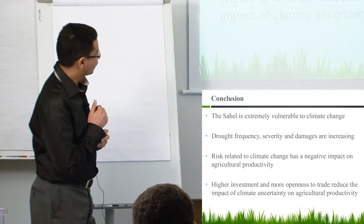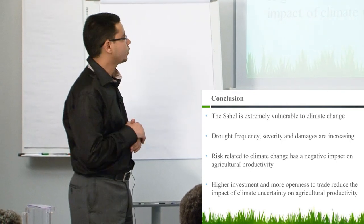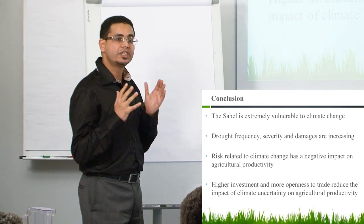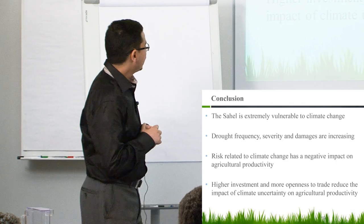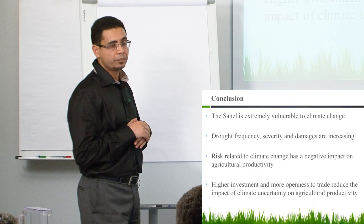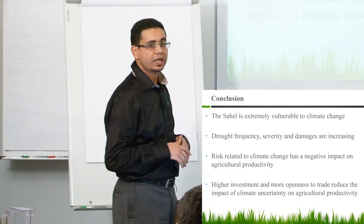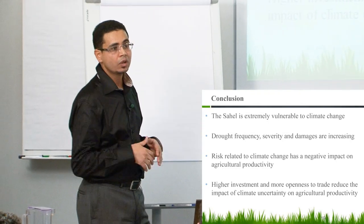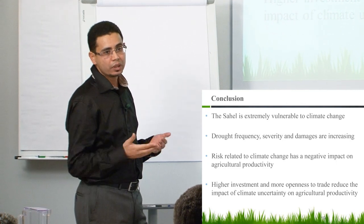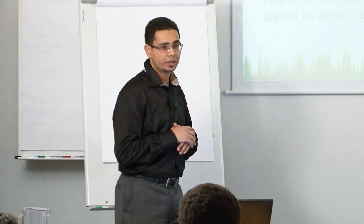To conclude: the Sahel is clearly very vulnerable to climate change. The frequency of drought and the damage caused by drought is increasing over time. Risk related to climate change has an impact on the behavior of farmers and on agricultural productivity. We can show that a better macroeconomic environment and more trade may help to smooth the impact of climate change risk on agricultural productivity. Thank you for your attention.